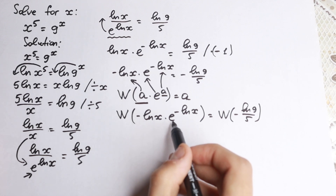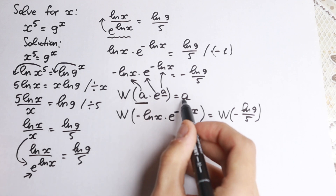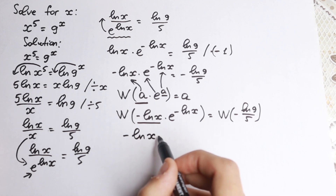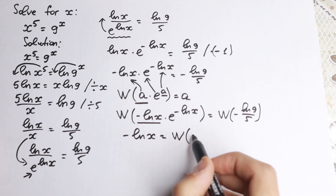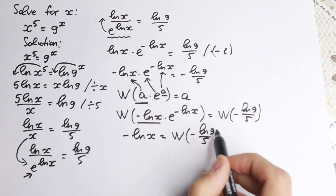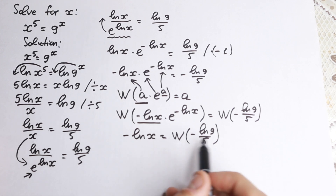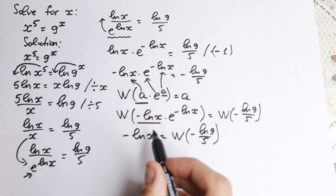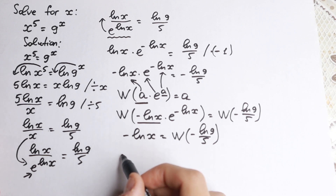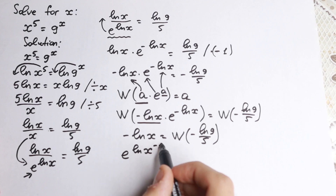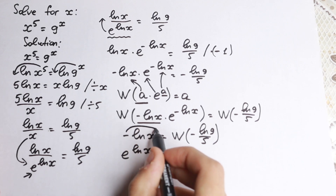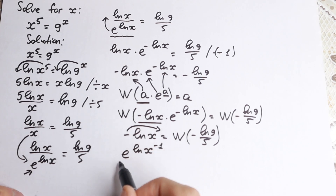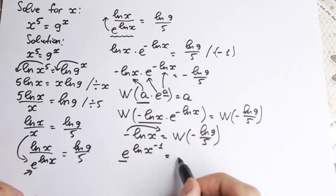Now we can apply the Lambert W function to both sides. The left side matches the form a·e^a where a = minus natural log x, so applying W gives us: minus natural log x equals W(minus natural log 9 over 5). To isolate x, we rewrite this as e to the power natural log x to the power minus 1 on the left, and we write e to the power W(minus ln 9 over 5) on the right.